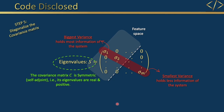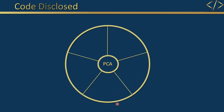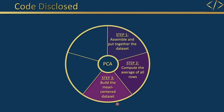The covariance matrix is a symmetric matrix, which means all eigenvalues are positive and real. Let me recap the five PCA steps before we go to MATLAB: Step 1 is to assemble the dataset. Step 2 is to compute the average of all rows. Step 3 is to build the mean-centered dataset. Step 4 is to build the covariance matrix. Step 5 is to diagonalize the covariance matrix and keep the eigenvalues that hold the most information.